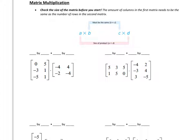Now let's go over how to multiply two matrices together using matrix multiplication. The first thing you want to do is check the size of the matrices before you start. The number of columns in the first matrix needs to equal the number of rows in the second. If I have an A by B matrix multiplied by a C by D matrix, B and C must be equal for the multiplication to be possible. The size of the product will be an A by D matrix.